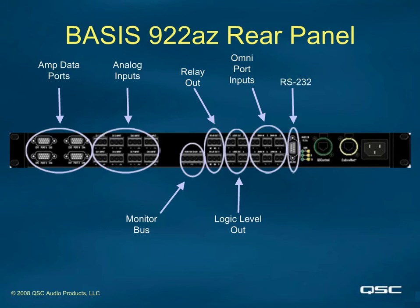There is an RS-232 port on the rear of the units. This is not for external control from other third-party devices such as Crestron or AMX — this port is strictly for setup and diagnostics of the Basis itself. We purposely limited the functionality of this port. If you wish to use other third-party controllers with Basis, you must use network-based IP controllers. We supply you with the control strings along with the installation files for the Venue Manager program — these XML strings are simple ASCII strings to recall presets, change parameters, and so on.